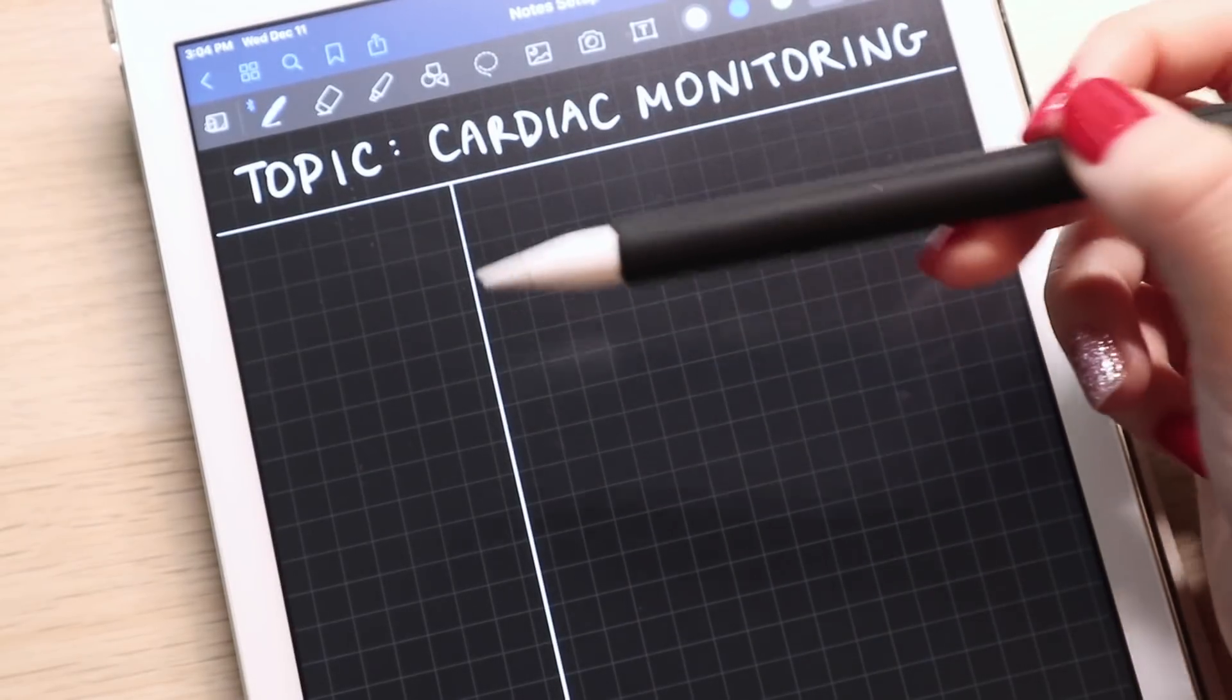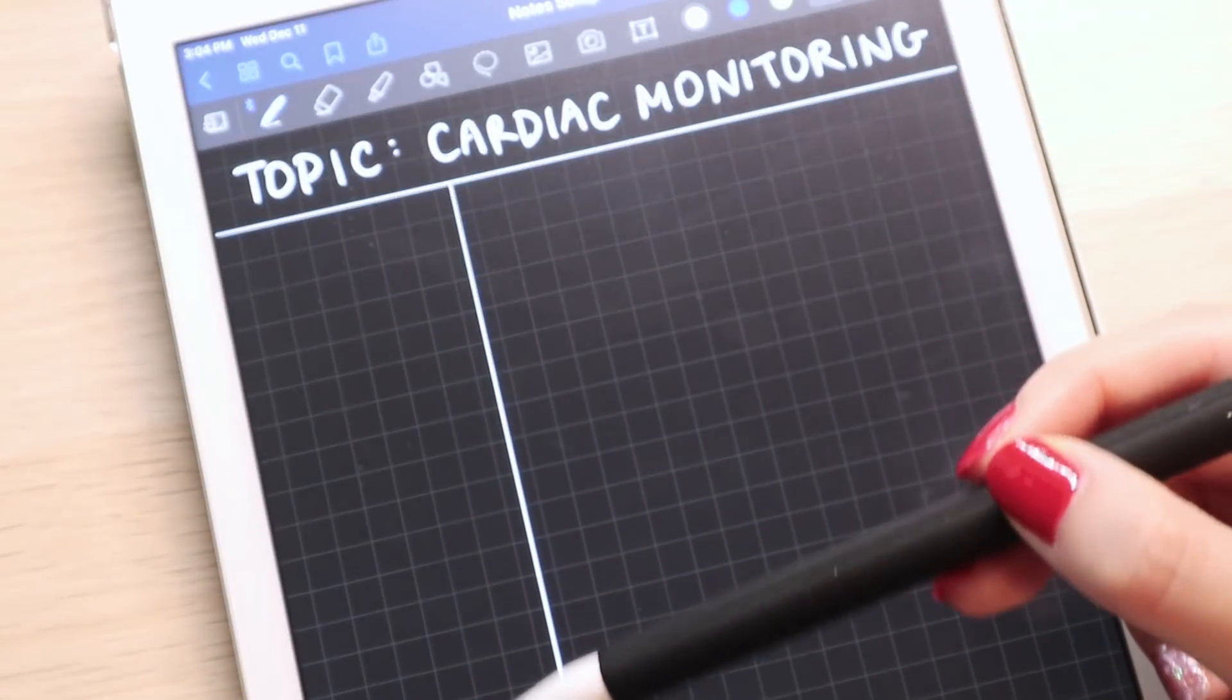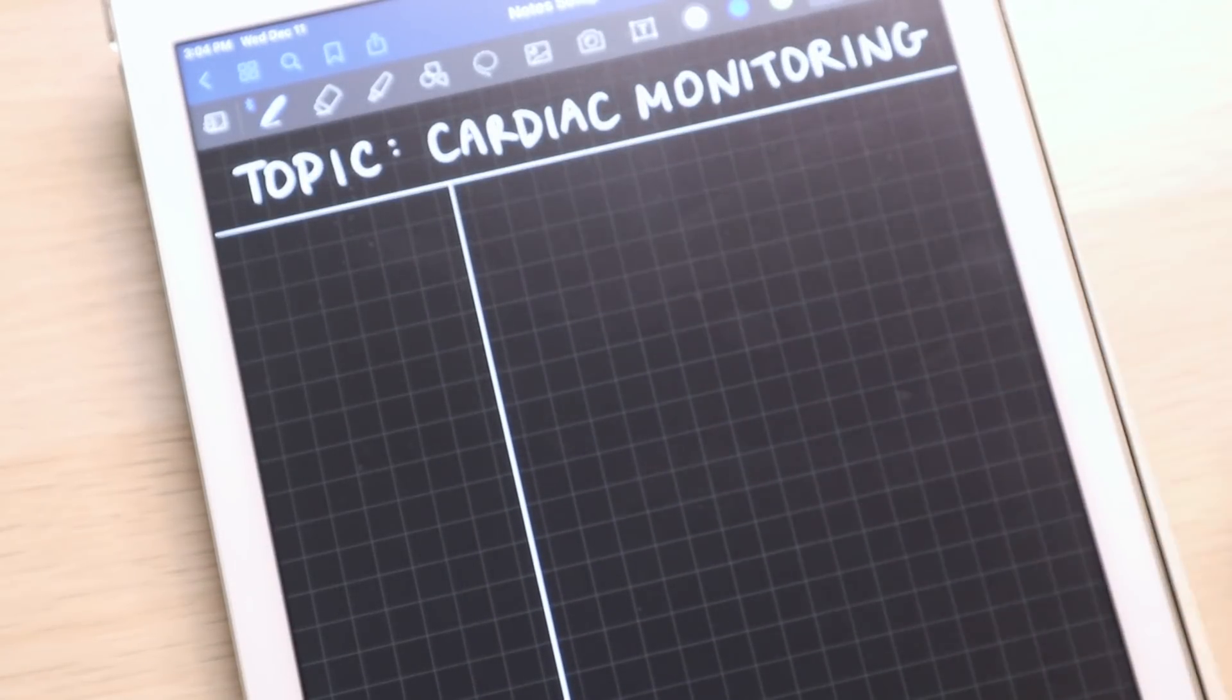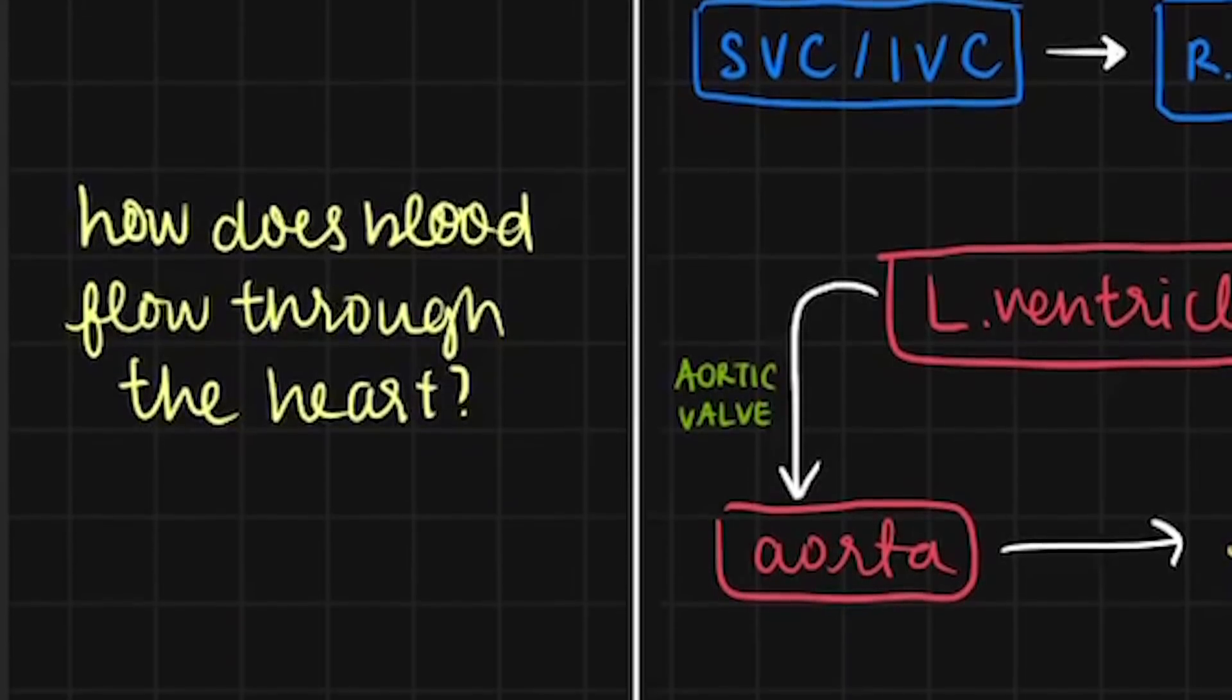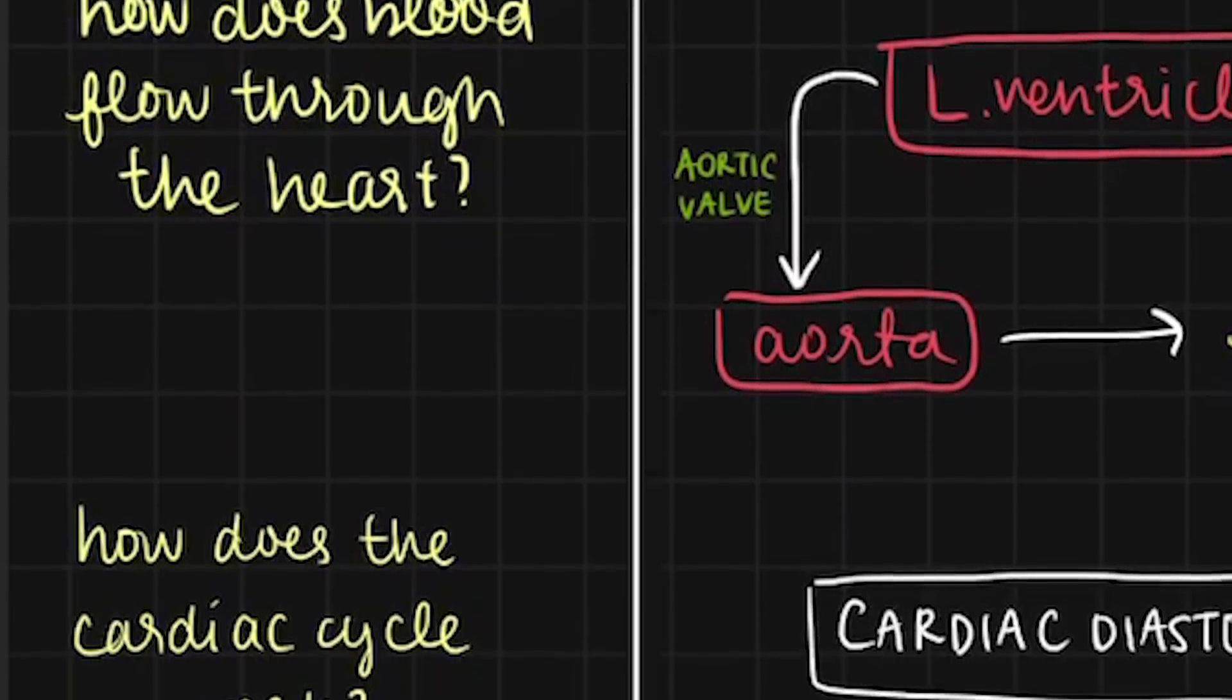So on the left column, I'll call this the recall column. Ask yourself questions when you're structuring your notes. What is X? How does Y work? What does X, Y, and Z mean?